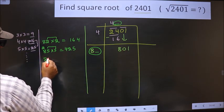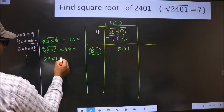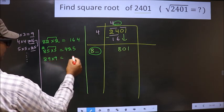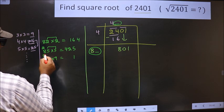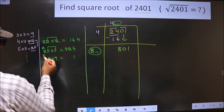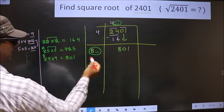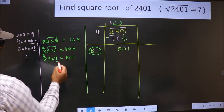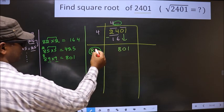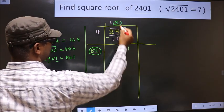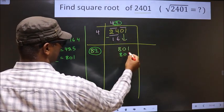So if we take 89 into 9, 9 into 9, 81. 1, 8. 9 into 8, 72. 82 plus 8 is 80. So we got 801 for the number 9. So here we take 9 and here also we take 9 and here 801.